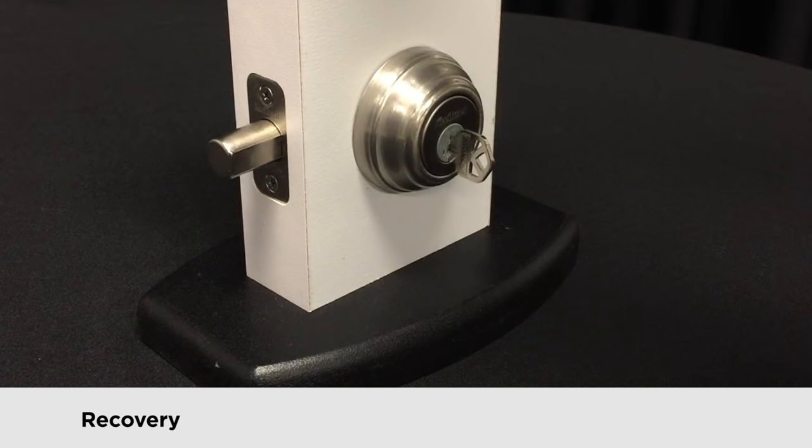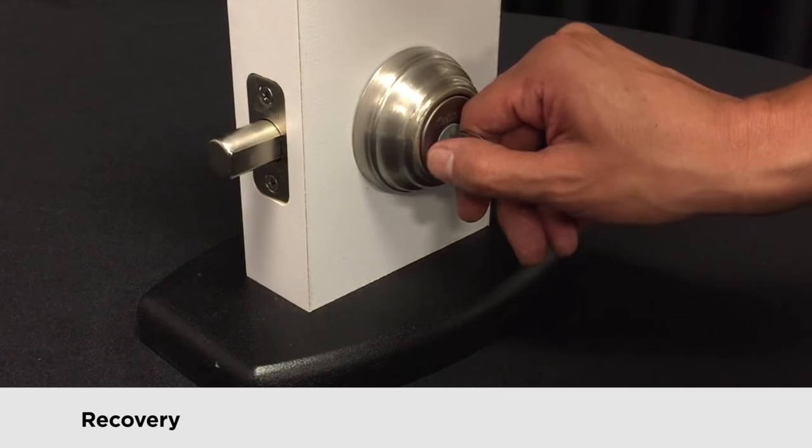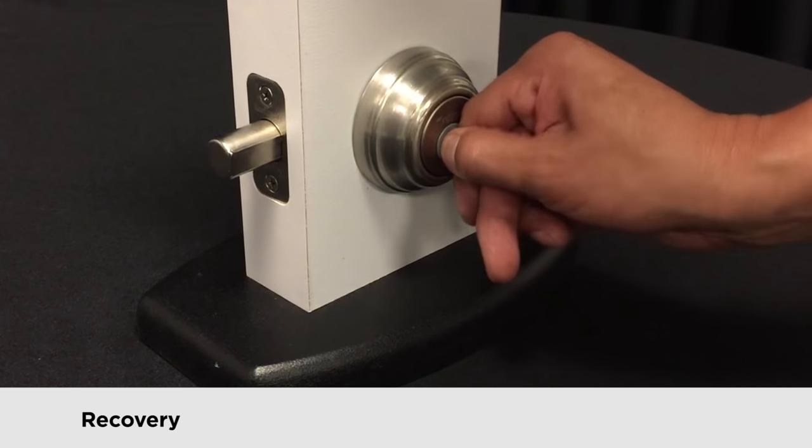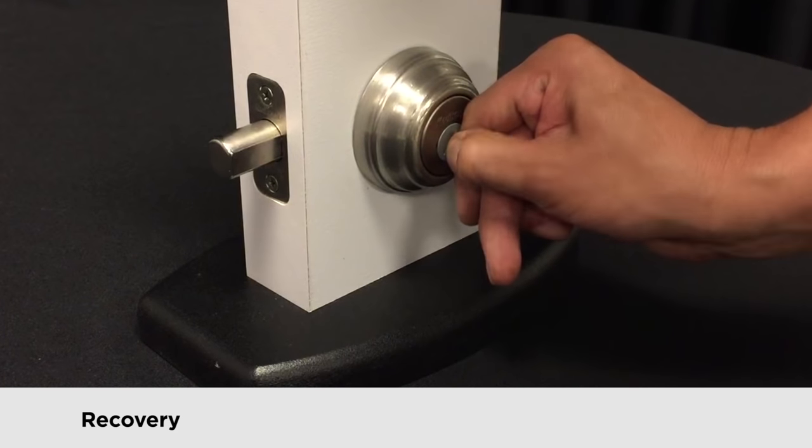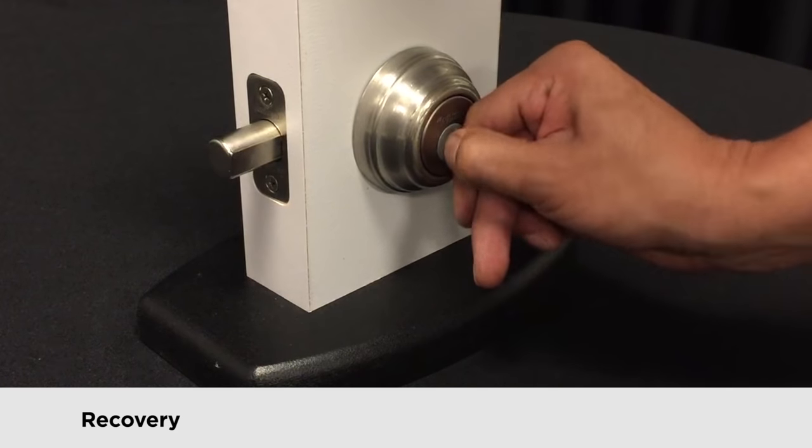Attempt to pull the key out less than a millimeter at a time while trying to turn to the right. Put your index finger and thumb right up against the cylinder face. This gives you more control over the amount that the key comes out as you're turning it.